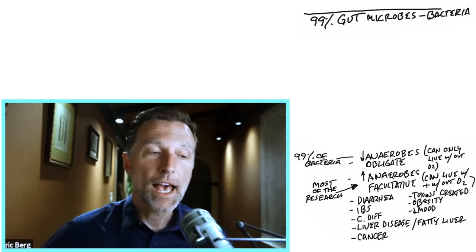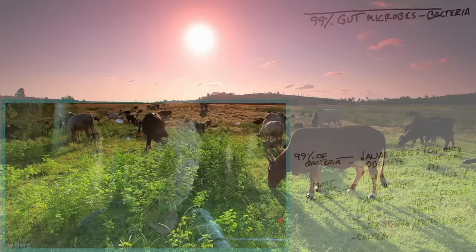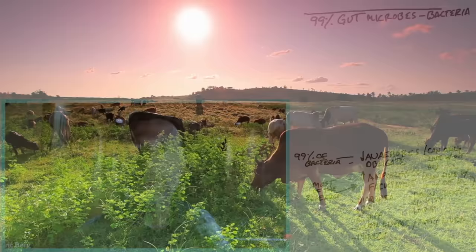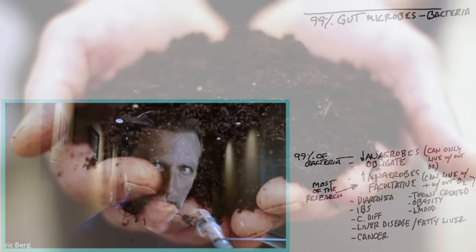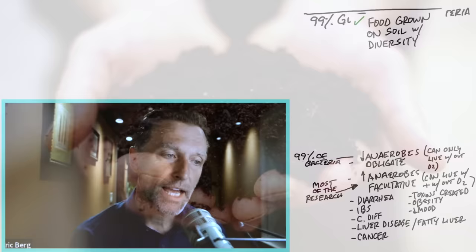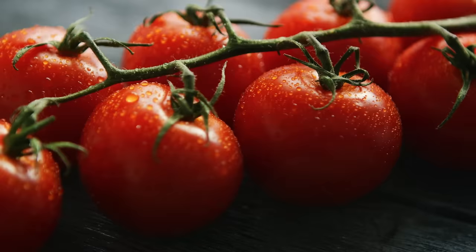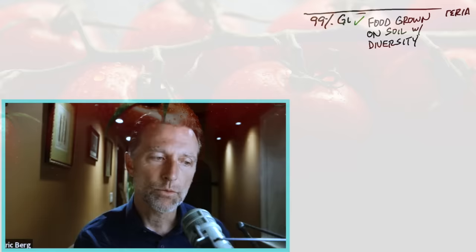That plant becomes stronger and is itself filled with microbes because plants also have their own microbiome. The health of the animal that eats the plant is dependent on the health of that plant. The first way to increase gut microbiome diversity is to eat food grown on soil that has diversity. Buying your salad and vegetables at the farmer's market will be better than at the grocery store. If the food has more flavor, you're going to have more nutrients, and you can be assured it was grown on a diverse soil microbiome.